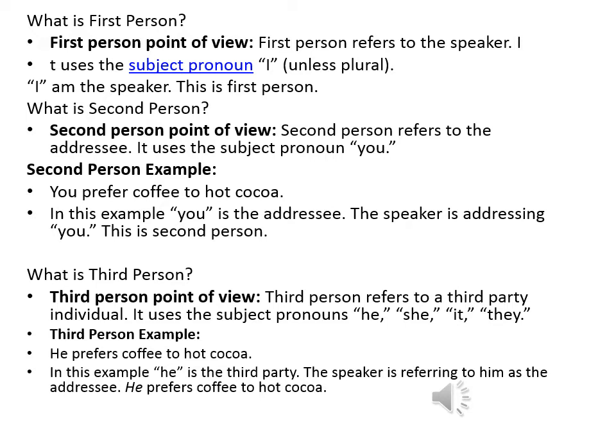Third person is the point of view when we refer to an individual. For instance, we could say he, she, it, or they. For example, 'He prefers coffee to hot cocoa.' In this example, 'he' means the third party — the speaker is referring to him as the subject being addressed.